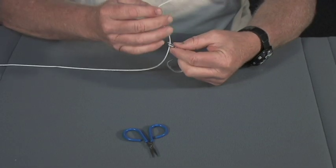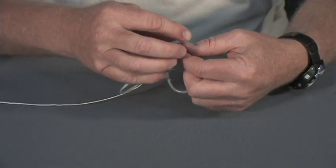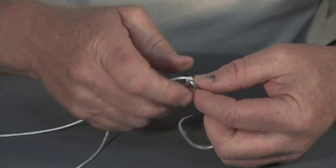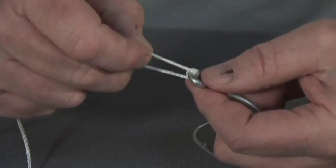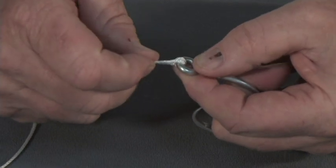Take the end of your line, bring it up through the eye of the hook, come through the eye one more time, and try to keep that area straight so you don't have an overlapping line as you come through the eye.